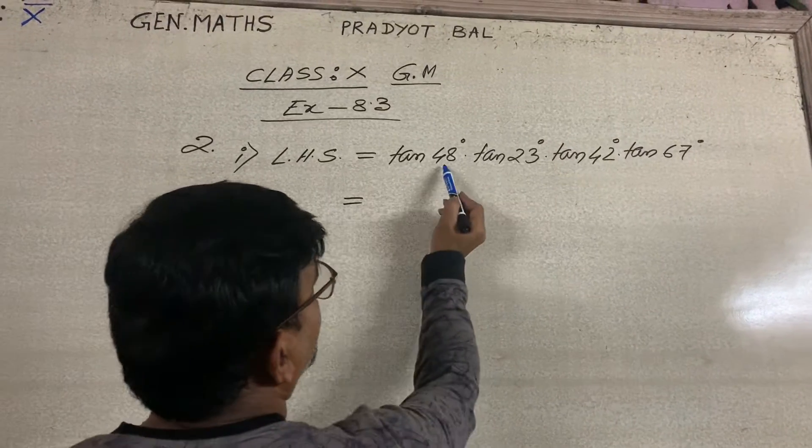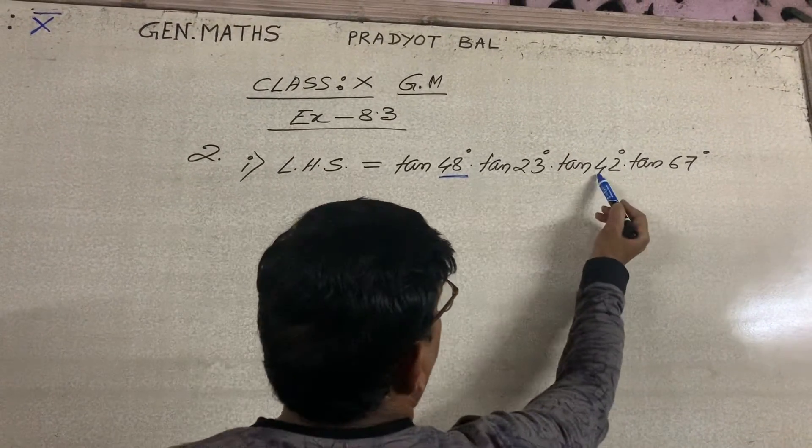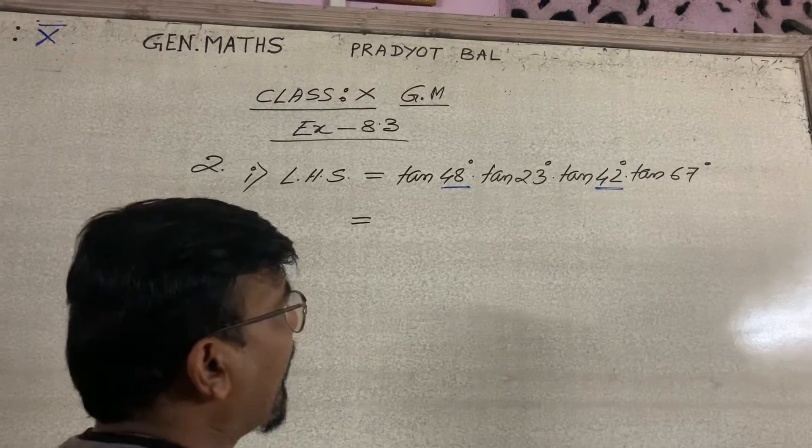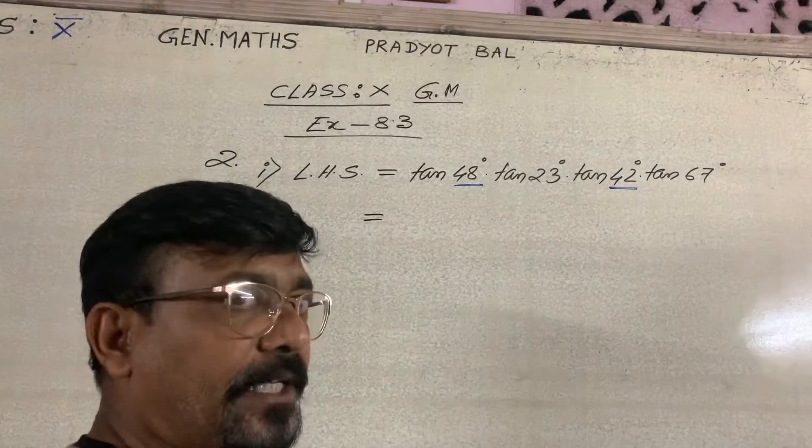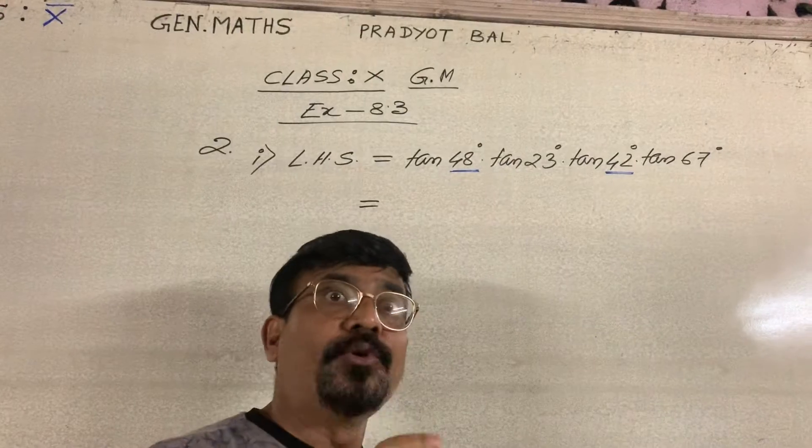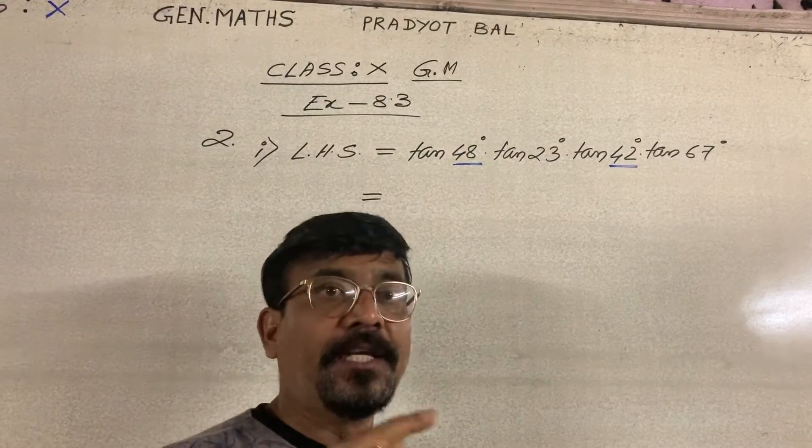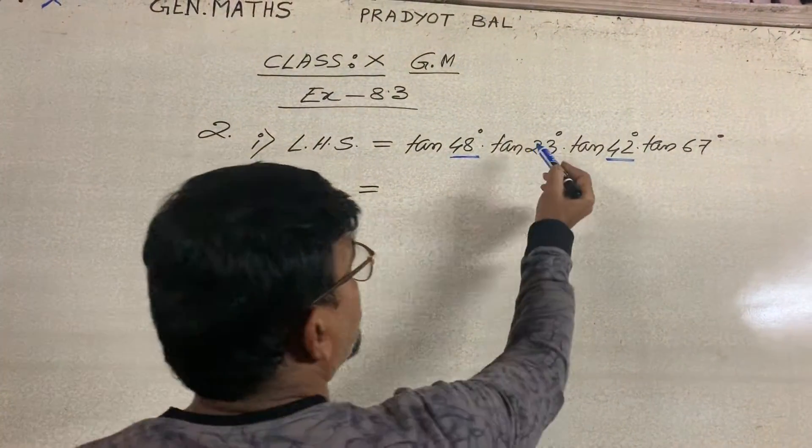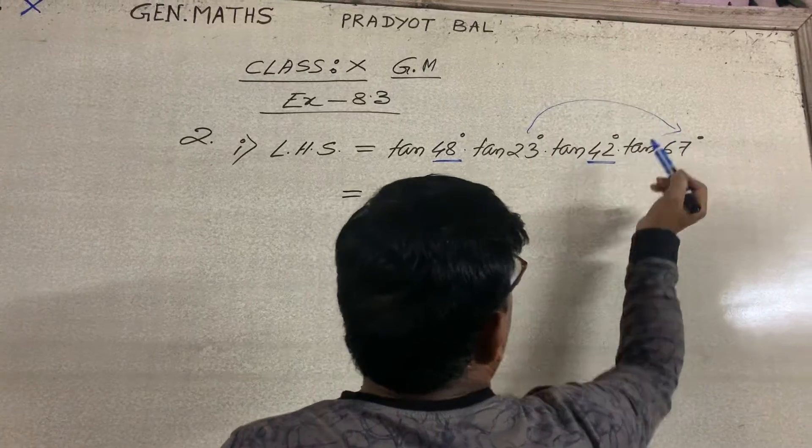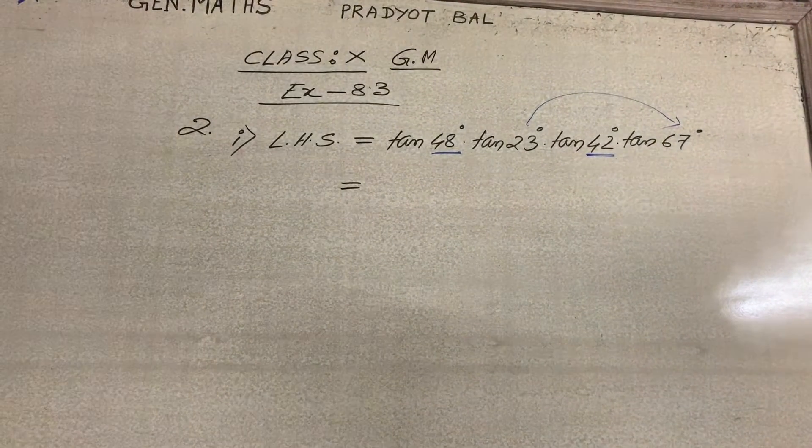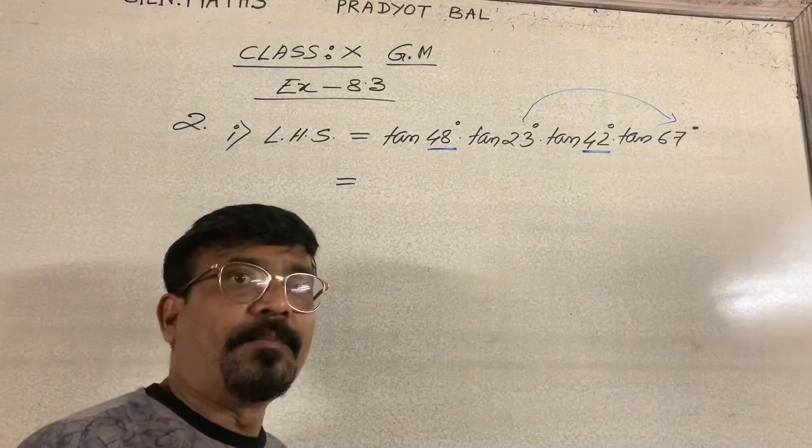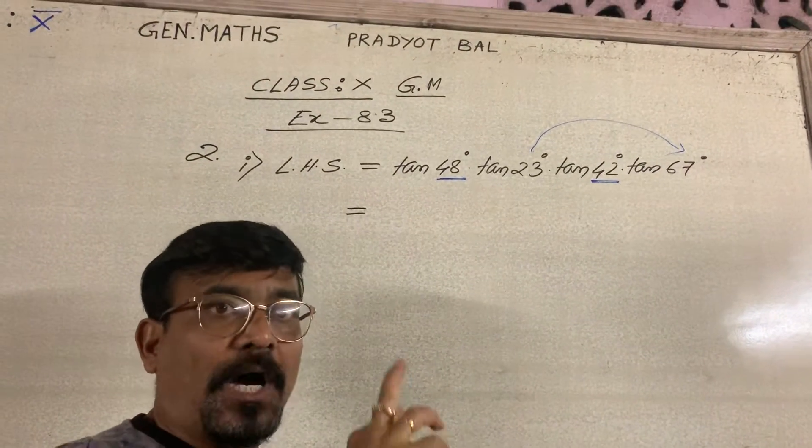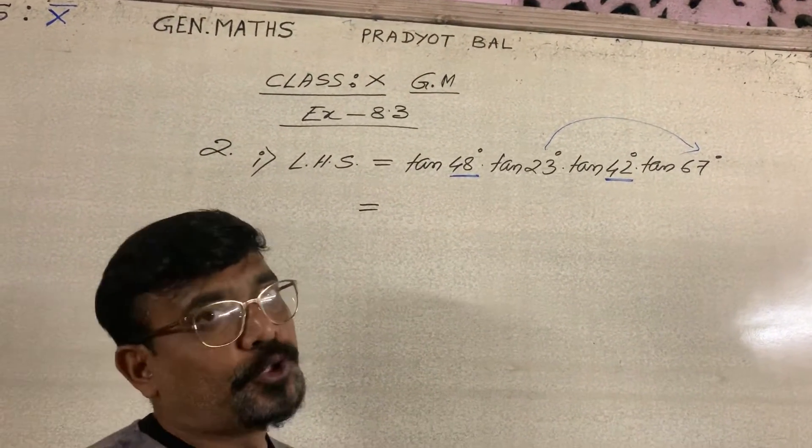Now which two angles? You see it is 48 degree and it is 42 degree. If you add 48 degree and 42 degree, you will get 90 degree. So in that case, you will have to change any one. Considering this, 23 degree and 67 degree, when added up gives 90 degree. So out of these two, any one should be changed.